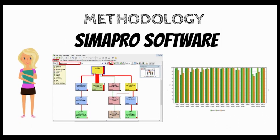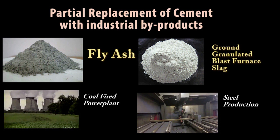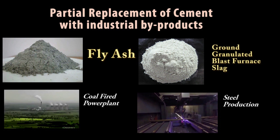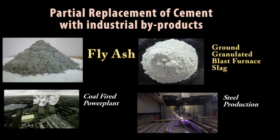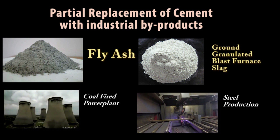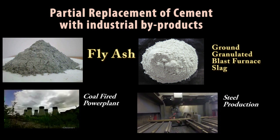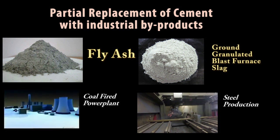For the methodology, we used SimaPro software to evaluate the life cycle of pre-mixture designs of UHPC. SimaPro software is an effective tool when it comes to life cycle assessment. It is used to study and monitor the environmental sustainability performance of products and services. Because of the high environmental impact of UHPC, partial replacement of cement with industrial by-products is commonly used, like fly ash from coal-fired power plants and ground granulated blast furnace slag from steel production.